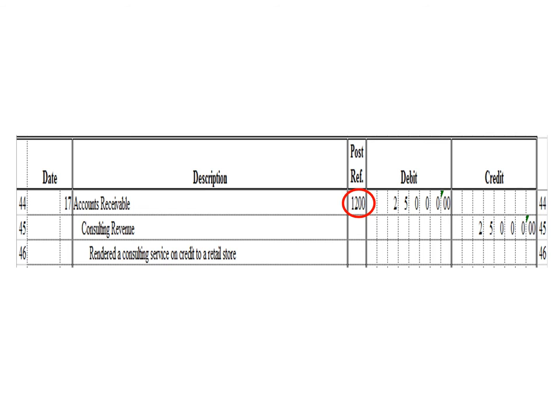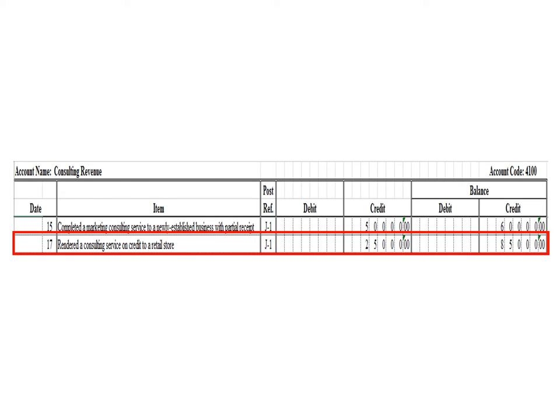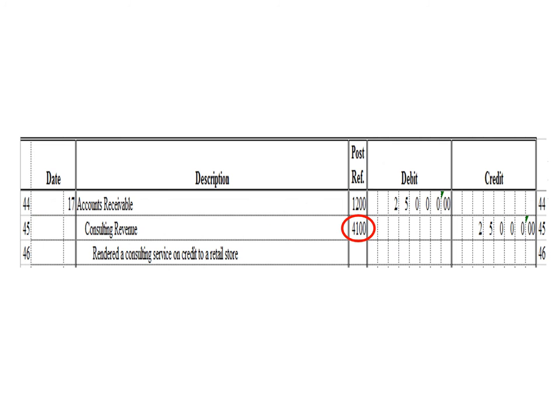Let us post the credit entry — a credit to consulting revenue 25,000 pesos. In the consulting revenue ledger, we write date 17, description: rendered a consulting service on credit to a retail store, posting reference J1. Under the credit column, write 25,000 pesos. The balance is 85,000 pesos — we added 60,000 credit to 25,000 credit. As of March 17, the consulting revenue ledger balance is 85,000 pesos credit. After posting, write posting reference 4100.